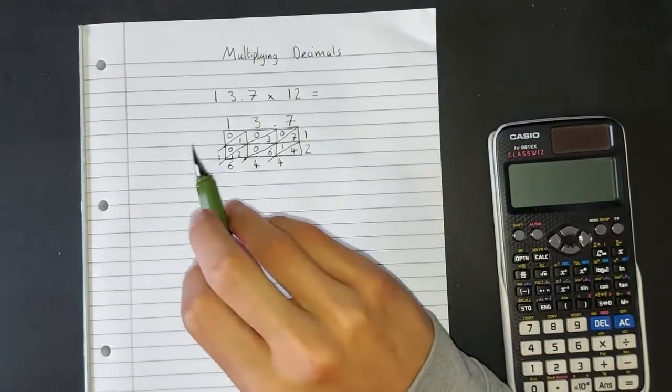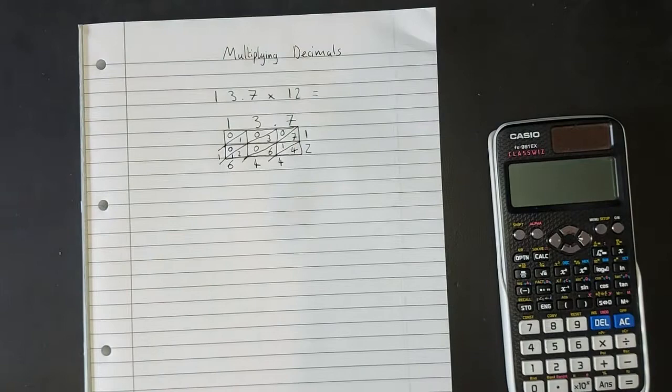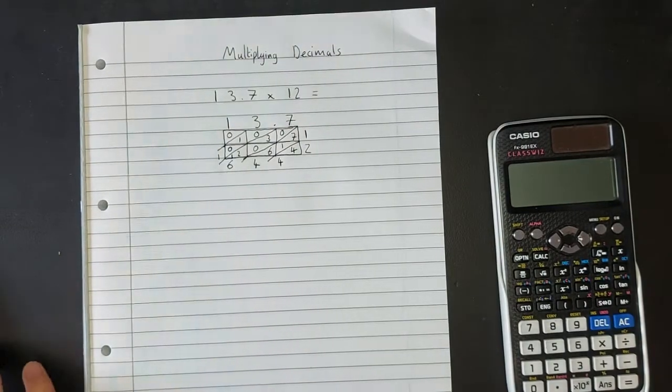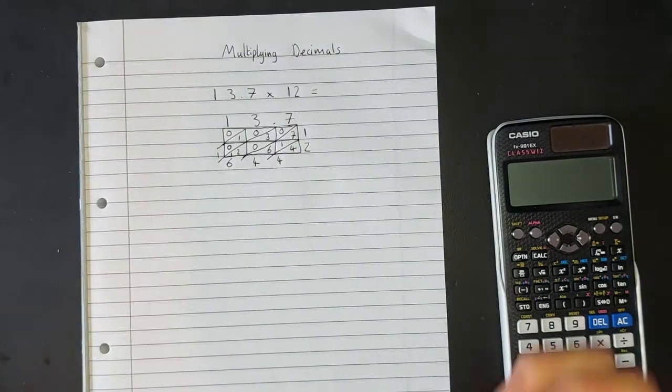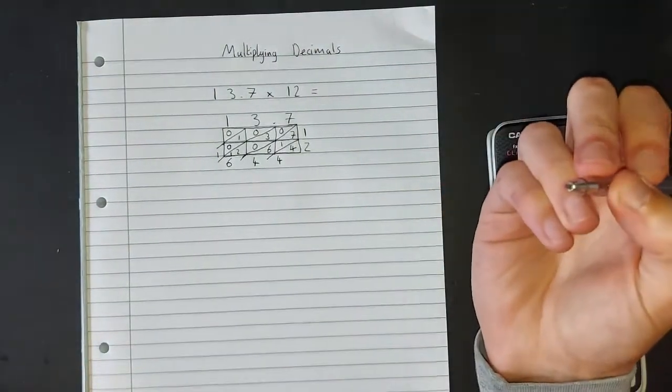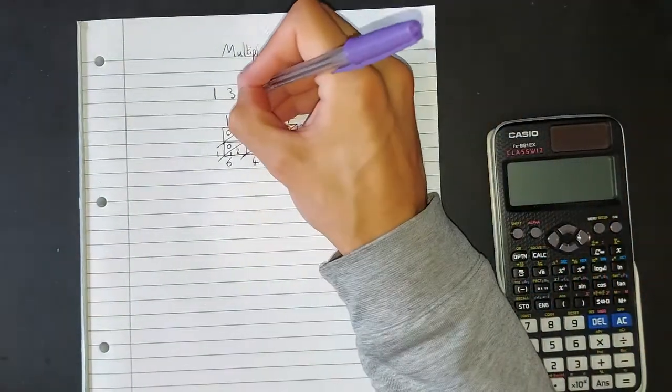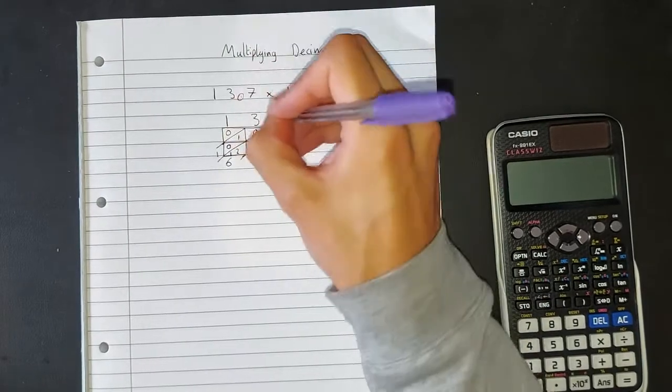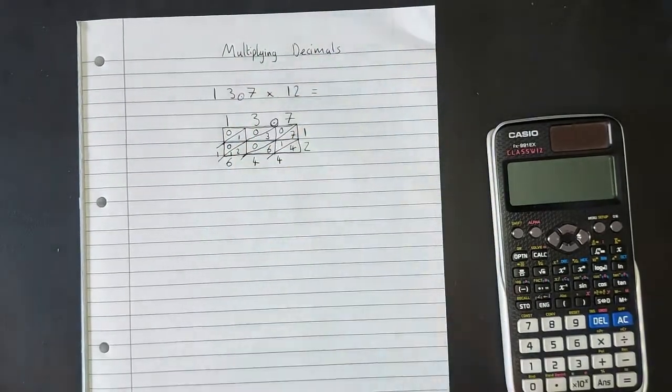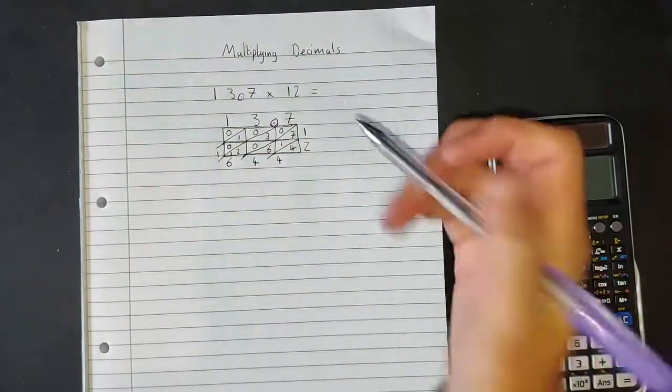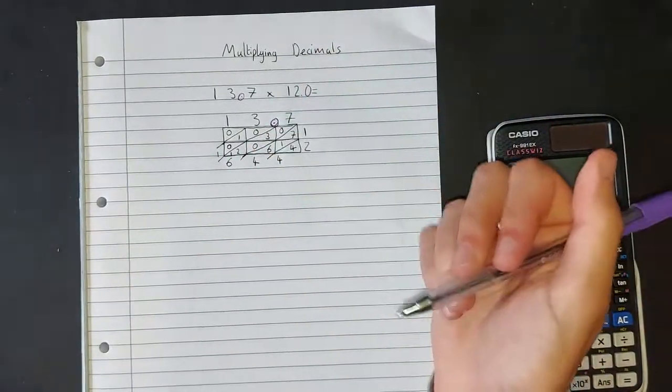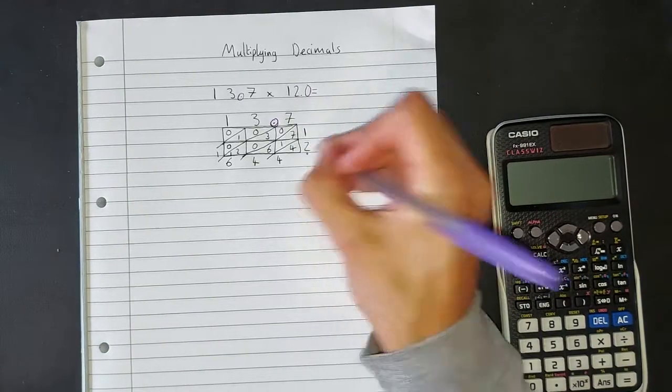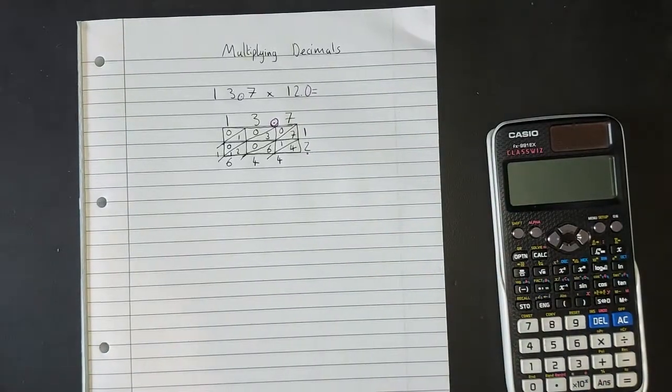So here we have something that looks like an answer. Now, you may think that having them decimals there has not changed anything. This is where Napier's method is really good. So we want to look at where the decimal point would be for both of these numbers. So 13.7, we can see the decimal, it's just here. 12, now, straight after the units, there would be a decimal here. If you wrote 12.0, it would not change that number. So there would be a decimal here.